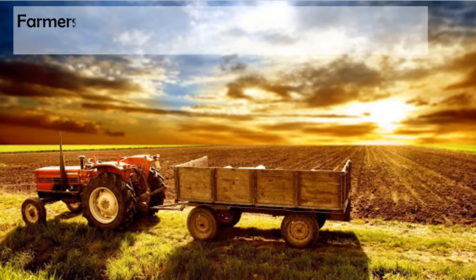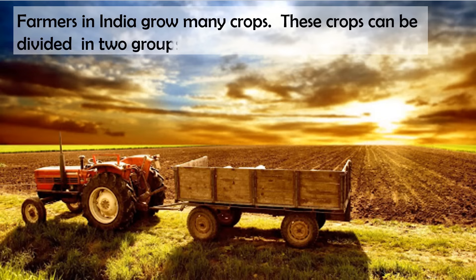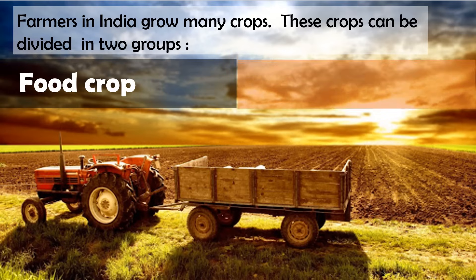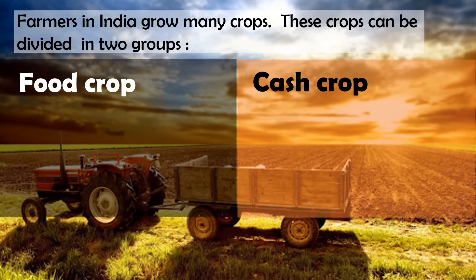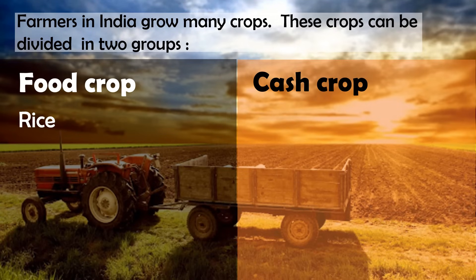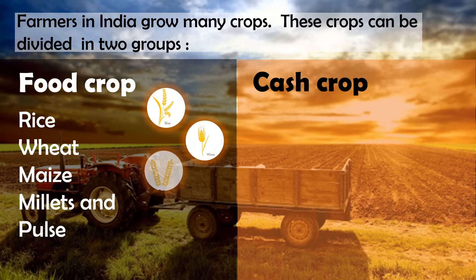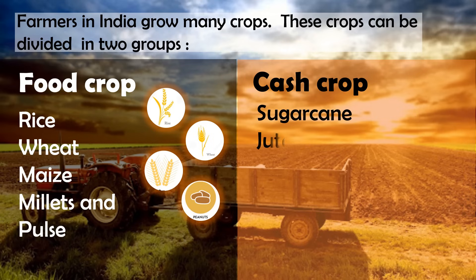Farmers in India grow many crops. These crops can be divided into two groups: food crops and cash crops. Food crops include rice, wheat, maize, millets, and pulses. Cash crops include sugarcane, jute, cotton, oil seeds, tea, coffee, and coconut.